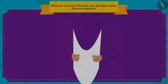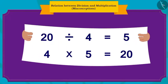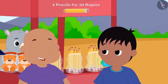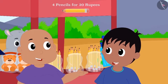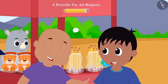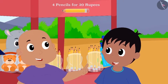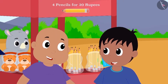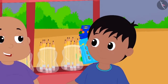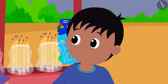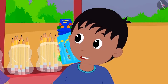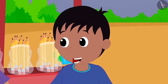Then, Bablu wrote these division and multiplication equations for Raju. He told Raju that he found the answer for division by using multiplication. Raju got excited when he heard about the relation between division and multiplication.